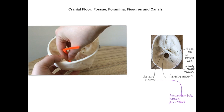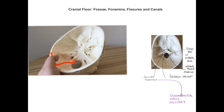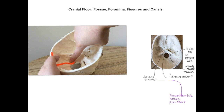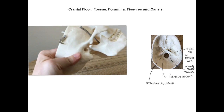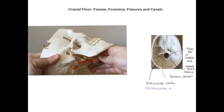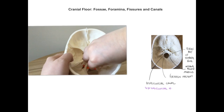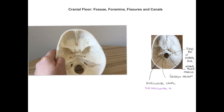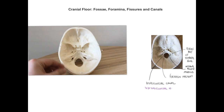The last structure to consider in the posterior cranial fossa is the hypoglossal canal — a canal running through the occipital bone at the edge of the foramen magnum — which transmits the hypoglossal nerve down towards the tongue to supply its muscles. There are clearly quite a number of features of the base of the skull — foramina, fissures, and canals — and with repetition and repeated handling of the skull, testing yourself, it will eventually start to stick and make more sense.